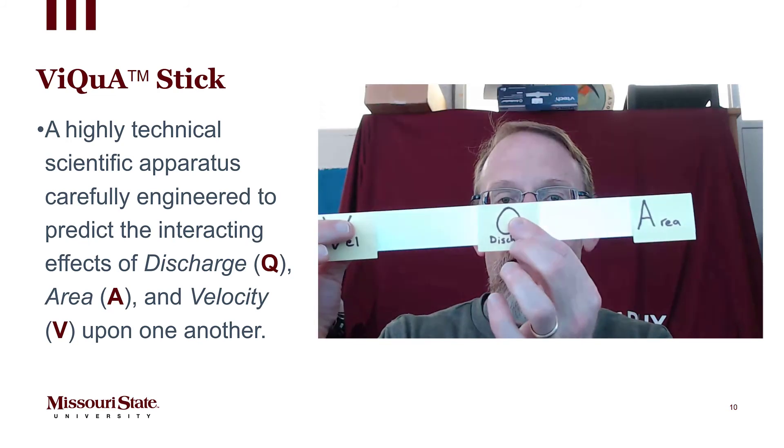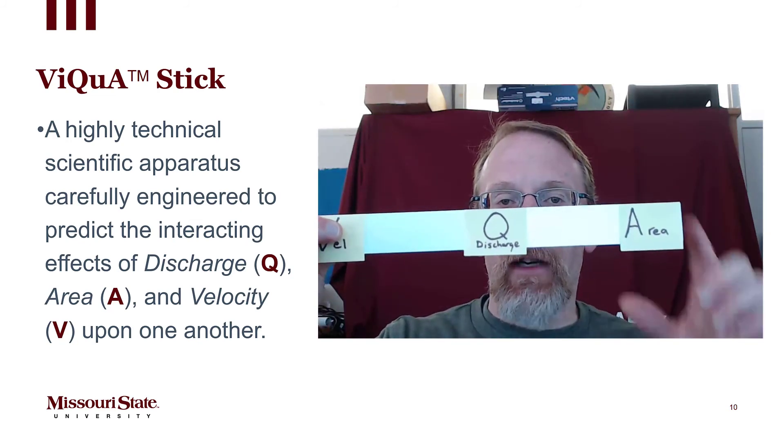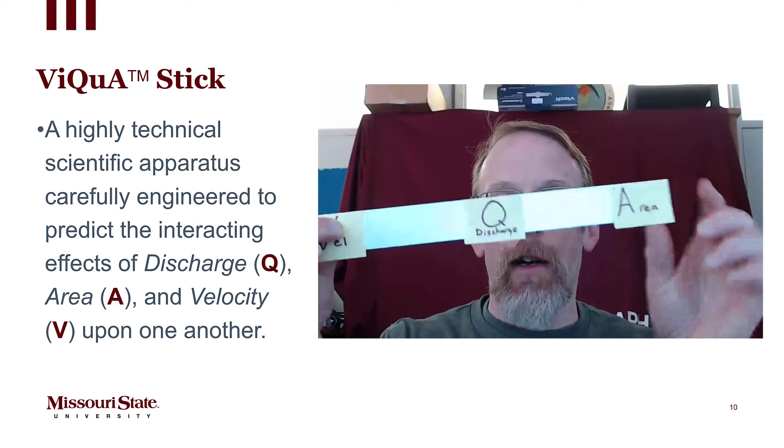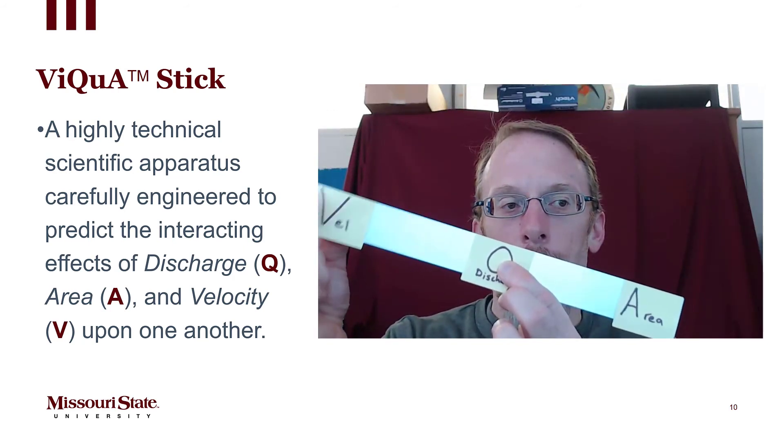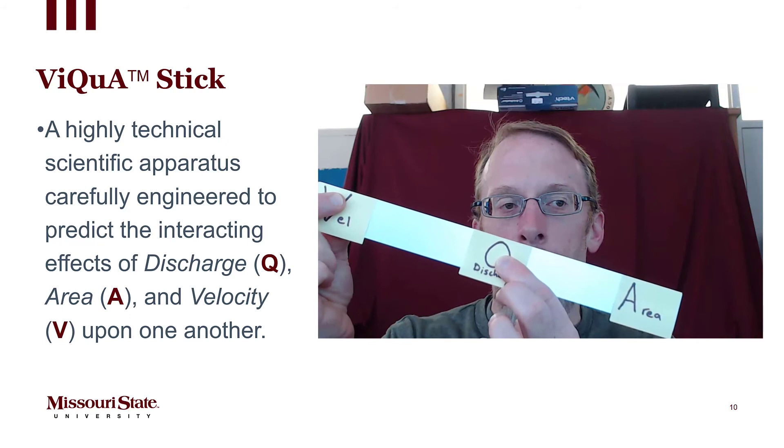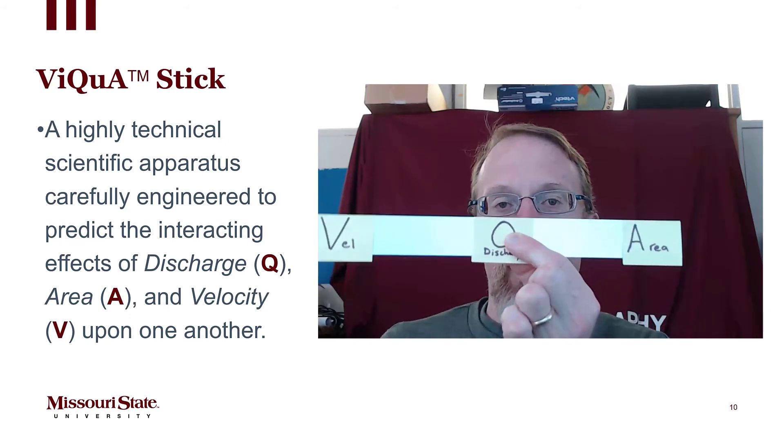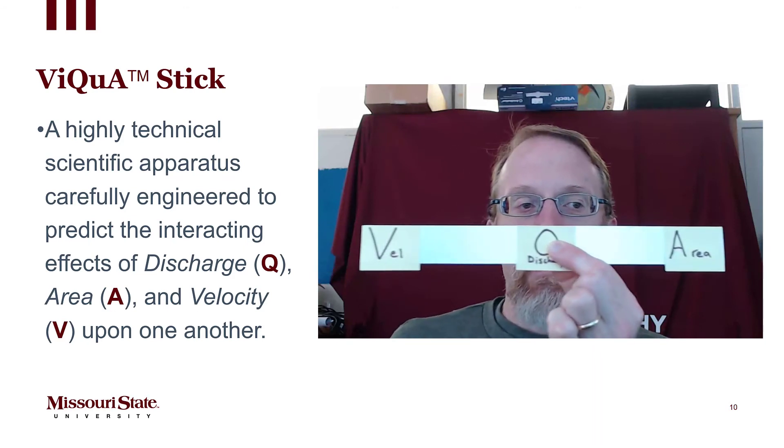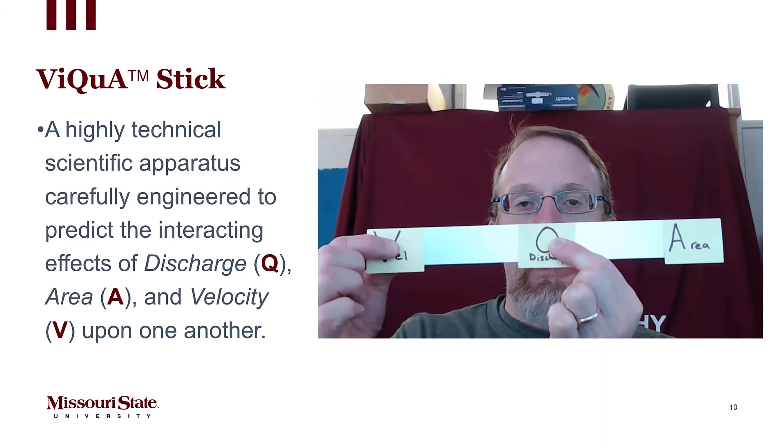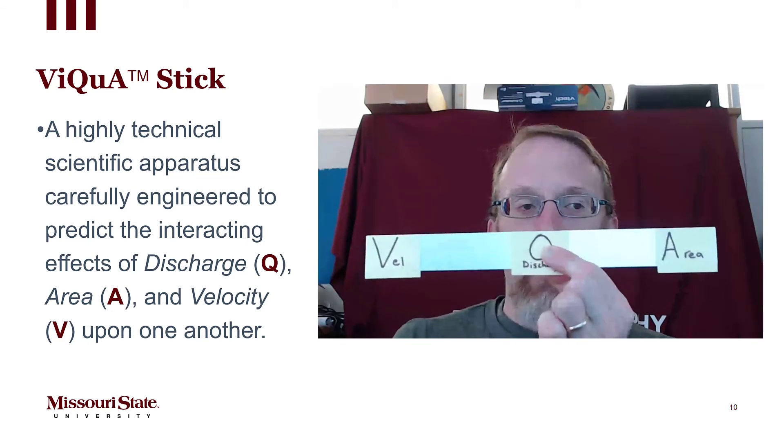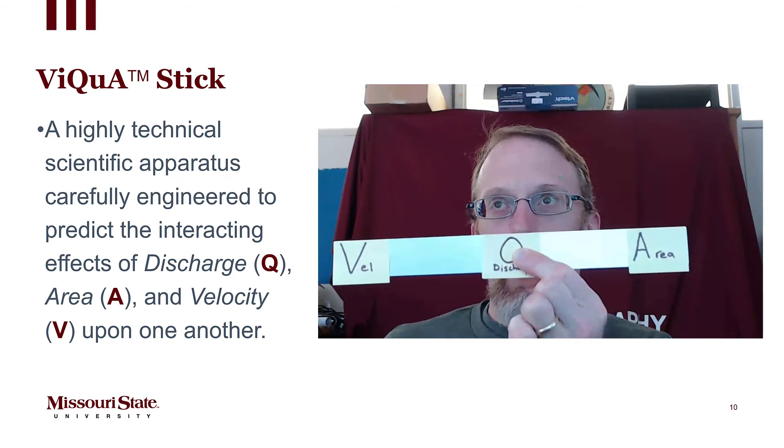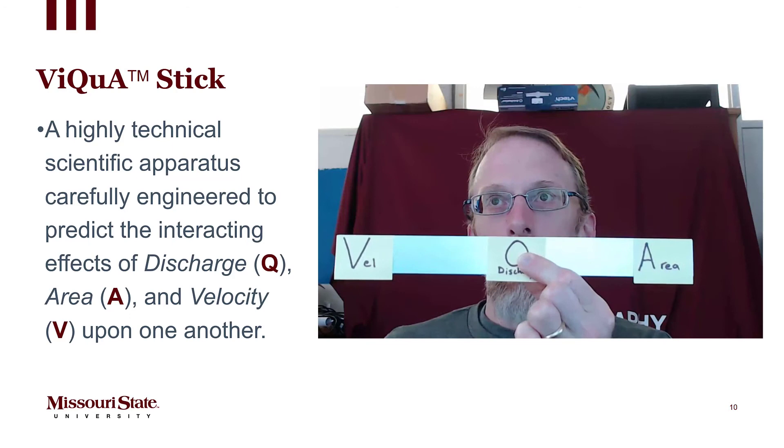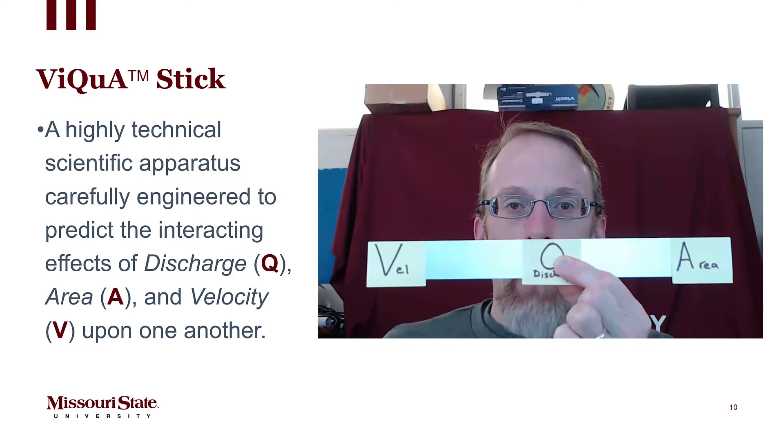The same thing here: if we hold discharge constant, increase area, velocity has to decrease. And we can do this wherever you put your finger, that's what you're holding constant. You move another variable, we can move discharge down, hold velocity constant, and that means area has to decrease. So it works. Just put your finger on whatever you want to hold constant, move the other one up or down, and you see the relationship to the other two variables. It's a really simple tool but it's something that can help you get your head around this math even if you're not a math whiz.